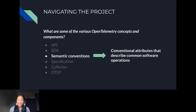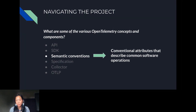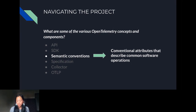Semantic conventions are conventional attributes that describe common software operations, technologies, events, and protocols. Their power lies in bringing uniformity to data, which allows back-ends to easily parse and identify relevant information. For example, HTTP or database calls are consistent regardless of which platform or language is being used. If a Python application calls a .NET application, both will conform to HTTP conventions — for example, the http.method attribute, used to specify GET, POST, or PUT, will be uniform across both applications.